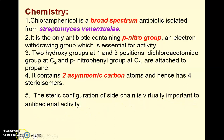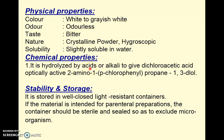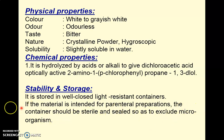Chloramphenicol's physical properties: it is a white to grayish-white, odorless, bitter-tasting, crystalline, hygroscopic powder slightly soluble in water. Chemically, it is hydrolyzed by acids and alkalis to give dichloroacetic acid and 2-amino-1-(para-nitrophenyl)propane-1,3-diol. For storage, it should be kept in a tightly closed, light-resistant container. If intended for parenteral preparation, the container must be sterile and sealed to exclude microorganisms, following sterility parameters.